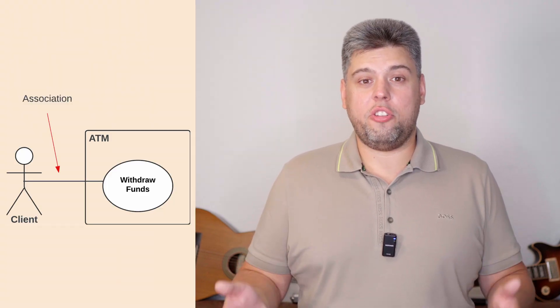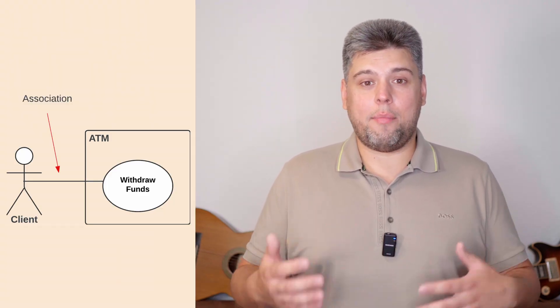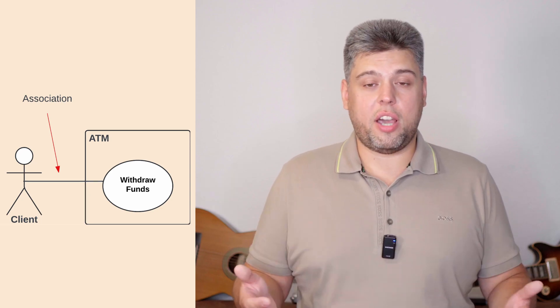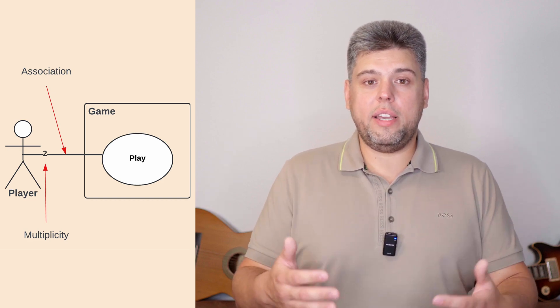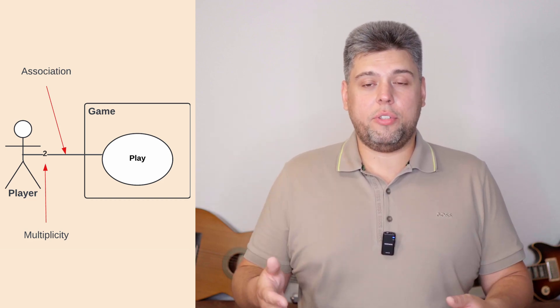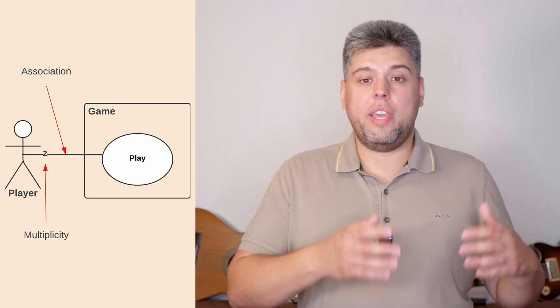At this step you have all the entities and can start linking them with three kinds of relationships. The first one is exclusive to link actors and use cases and it's called association. If you have an association between them, it shows that the actor and use case somehow interact or communicate. This type of relationship doesn't have any direction, so you should use a plain line with no arrows. You can use multiplicity when necessary to show how many users of the same role interact with the use case at the same time — for example, if you need at least two players to play the game, add two above the association next to the actor's name.